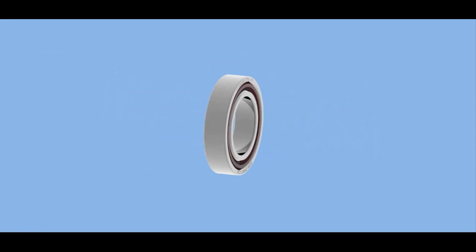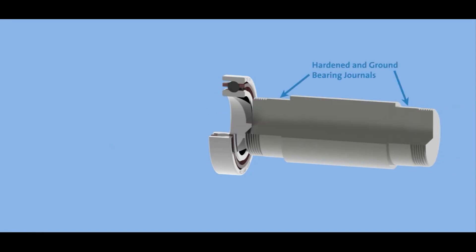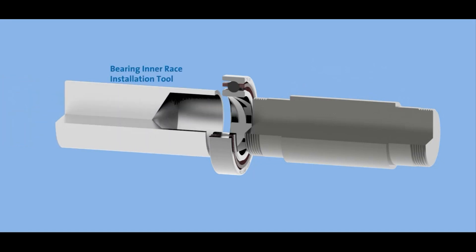GMN recommends using a press fit on the shaft and a slip fit in the housing. What's also important to remember is that the bearing journals themselves need to be hardened and ground with a sufficient shoulder for good load transfer.